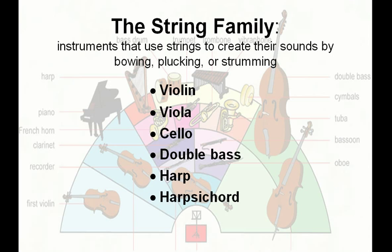The string family includes instruments that use strings to create their sounds by bowing, plucking, or strumming. They include the violin, the viola, the cello, the double bass, the harp, and the harpsichord.